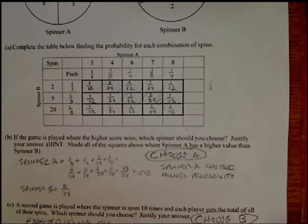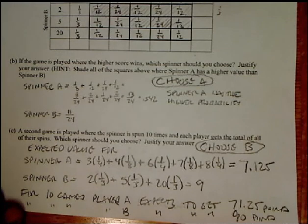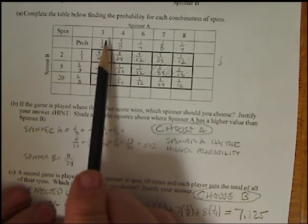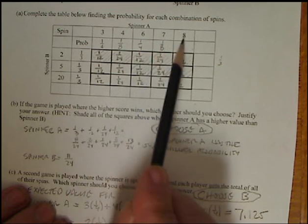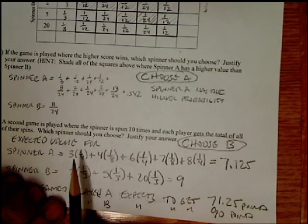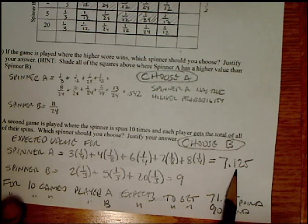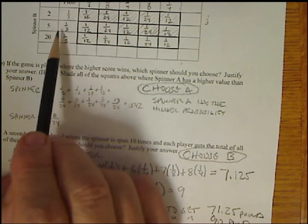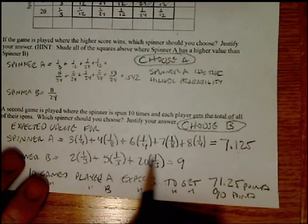The second game is played where they're going to spin it 10 times and then take their total. So the higher score, now I'm going to look at expected value. So I'm going to figure out the expected value for each one for a single spin, and then multiply that answer by 10. So for spinner A, we take our value times the probability. So it's 3 times 1 fourth, 4 times 1 eighth, 6 times 1 fourth, 7 times 1 eighth, 8 times 1 fourth. That's what I have written right here. Just do that on your calculator. For spinner B, basically you get 3 fourths, plus 4 eighths, plus 6 fourths, plus 7 eighths, plus 8 fourths. You get 7.125. For spinner B, they're all 1 third. So I get 2 times 1 third, 5 times 1 third, 20 times 1 third. If you calculate this out, I get 2 thirds, plus 5 thirds, plus 20 thirds. That's 27 over 3. That equals 9.